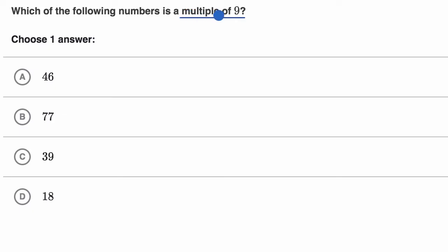One way to think about a multiple, a multiple is a number that you can get to by multiplying the number, in this case nine, by a whole number.